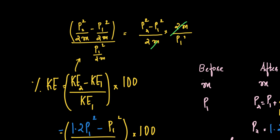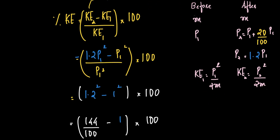So what we have is P2 squared minus P1 squared upon P1 squared. This is equal to, what is P2 squared? P2 squared can be written as 1.2 P1 squared. This is 1.2 P1 squared minus P1 squared, the whole upon P1 squared into 100.